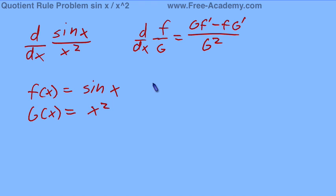We're going to find the derivative of f of x and g of x. The derivative of sine of x equals cosine of x, and the derivative of x squared equals 2x.